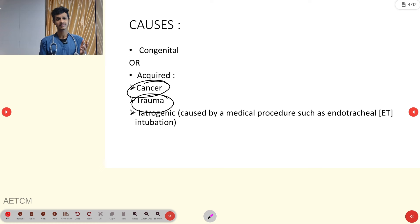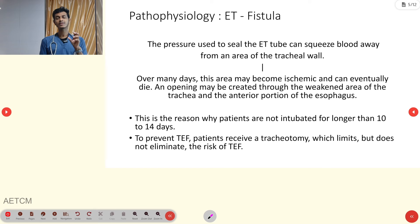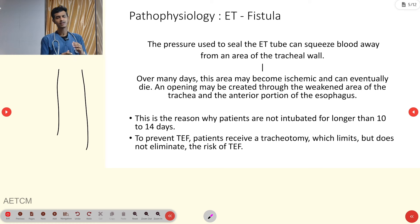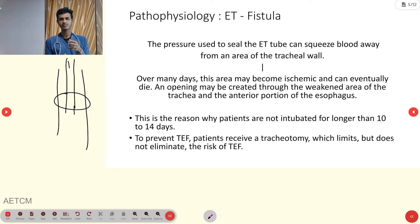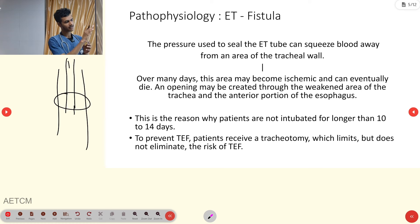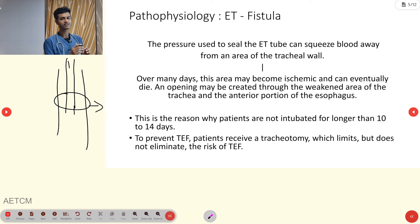Iatrogenic causes include medical procedures like endotracheal tube intubation, which can also lead to TEF. How does an ET tube cause tracheoesophageal fistula? In tracheal intubation, we intubate the ET tube and to anchor the tube — to secure it in place — we inflate the cuff with about 5 to 10 ml of air. While doing this air inflation, it creates a certain amount of pressure over the vascular region.